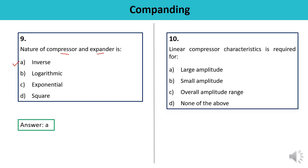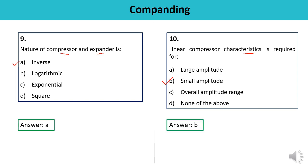Question number ten: Linear compressor characteristics are required for — large amplitude, small amplitude, overall amplitude range, or none of the above? Linear compressor characteristics are required for small amplitude, while logarithmic characteristics are required for larger amplitude. The answer is B — small amplitude.